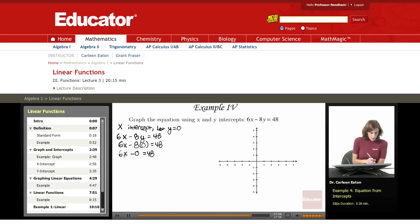So my y term dropped out, and I have 6x equals 48. Isolate the variable x by dividing both sides by 6, and I get x equals 8. So x equals 8 is my x-intercept.